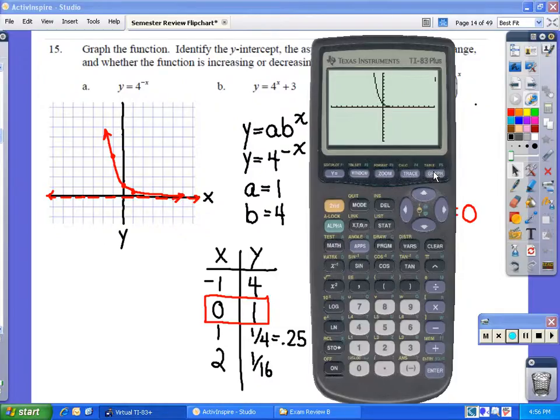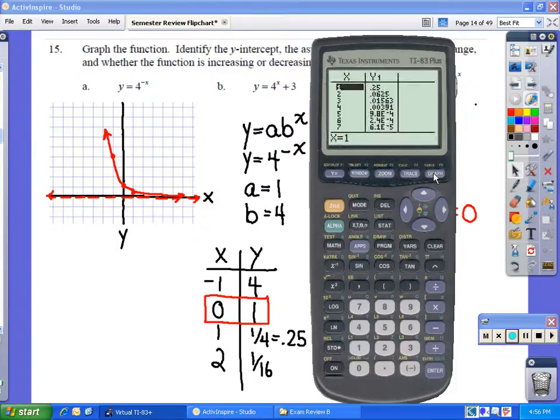The graph looks very similar to the one that we're looking at. We can then go to the data table and see all of the values that we might be interested in. And you can see that the y values as we increase our x values are getting closer and closer to zero.